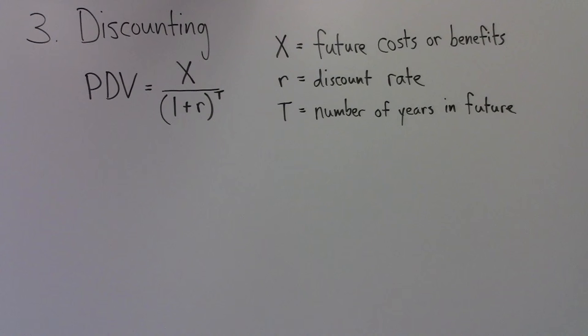An example may illuminate this formula. Imagine a policy that would create $100 of environmental benefits in 10 years, 50 years, or 100 years. What costs should we be willing to bear today in exchange for these future benefits?